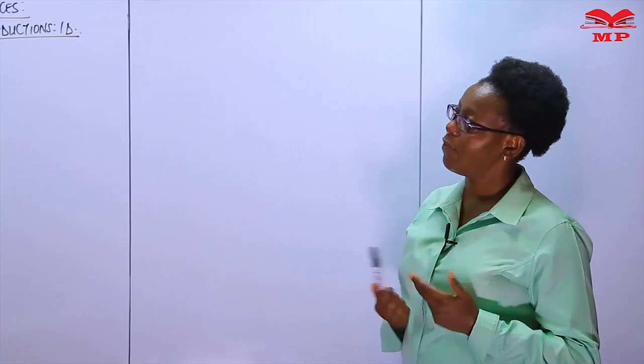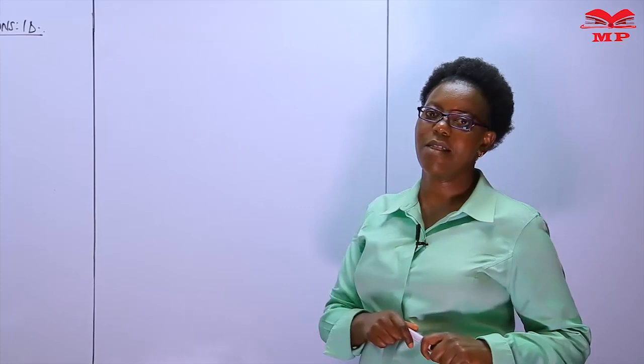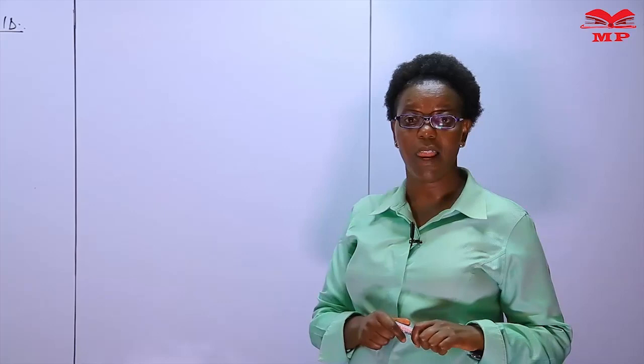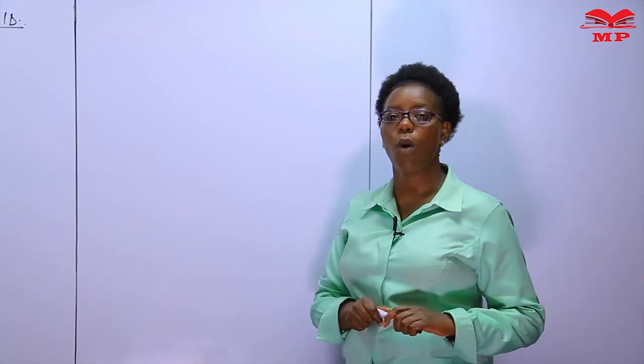Capital allowances are in different categories. There is investment deduction, there is industrial building deduction (IBD), there is wear and tear, there is shipping investment deductions for those in the shipping business, there is mining allowances for those in mining operations, and there is farmworks deductions for those who are commercial farmers.